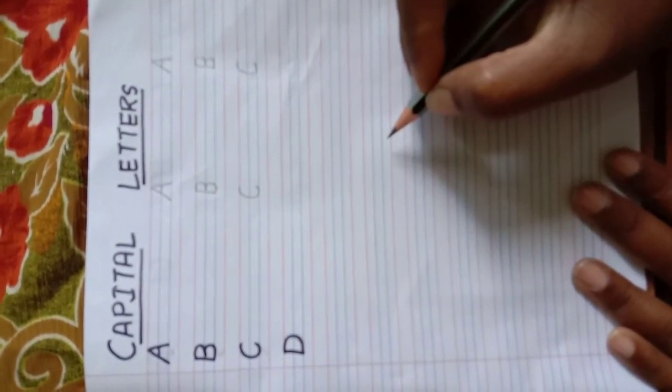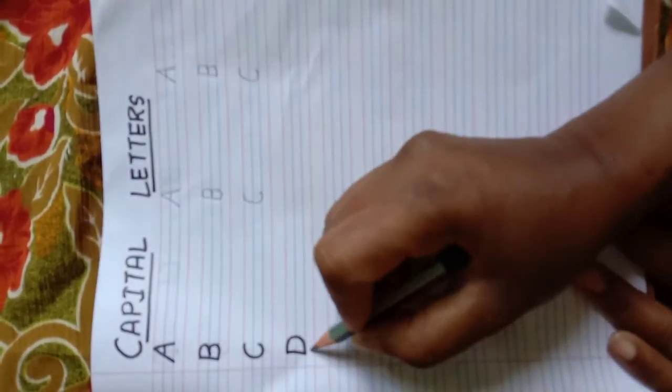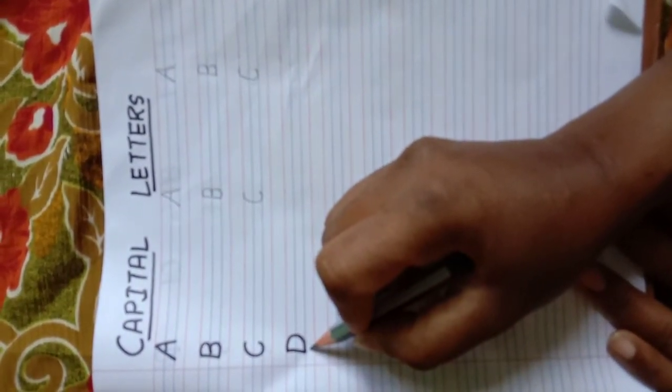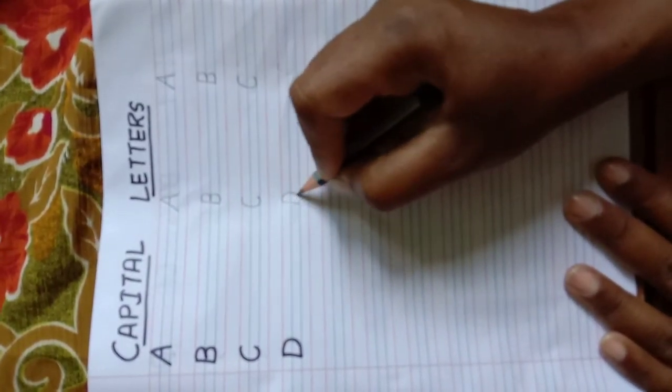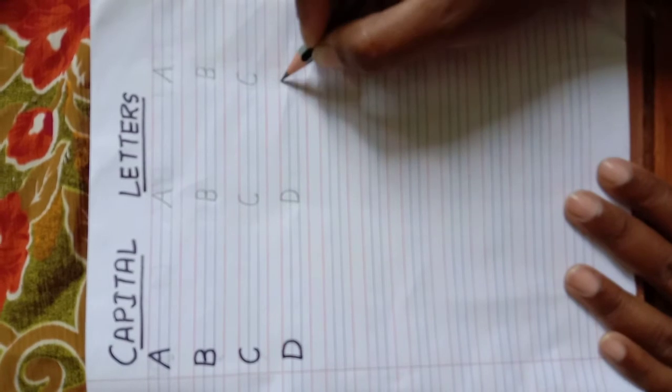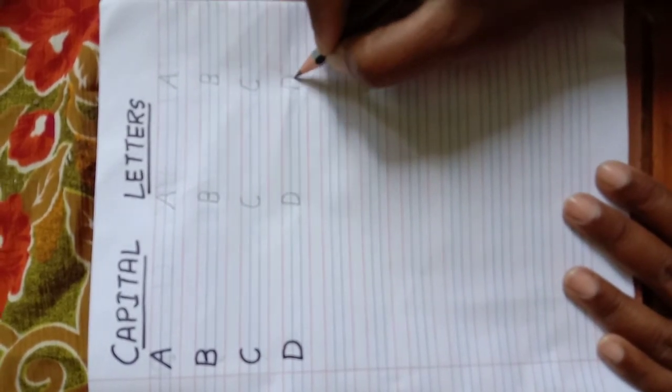Our fourth letter is D. D for dog. I will write D for dog. Once again, D for dog.